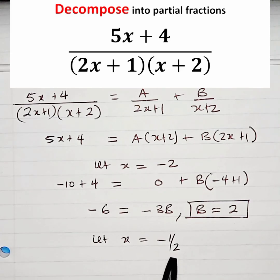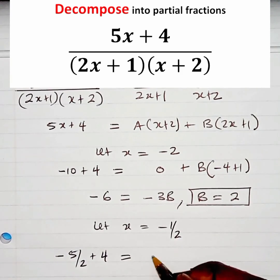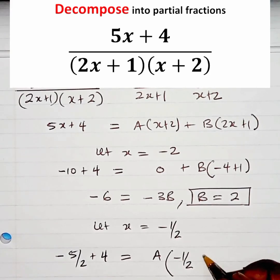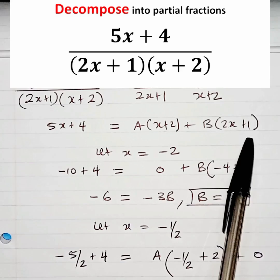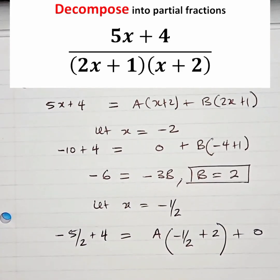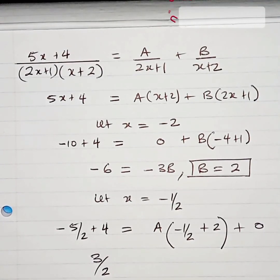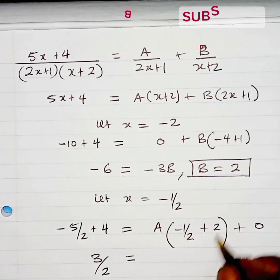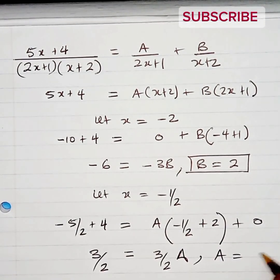If we put x equal to minus 1 over 2 in the equation, on the left-hand side we get minus 5 over 2 plus 4, equal to A times (minus 1 over 2 plus 2), plus 0 — because putting minus one half makes the B term become 0. If you simplify that, you get 3 over 2 on the left-hand side, and 3 over 2 on the right-hand side as well. And that means A is equal to 1.